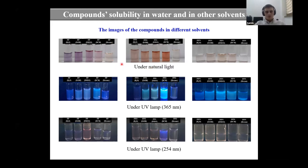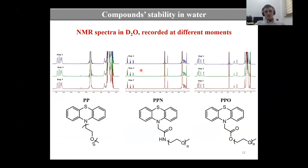We observed that depending on the solvent we have a difference in color of these compounds and also a difference in emissive fluorescence. This can be translated as a solvatochromic effect. As these compounds were designed for biological application, we decided to investigate the water stability and recorded NMR spectra in deuterium water during seven days. No modifications occurred in the NMR spectra, which means that these compounds are stable.